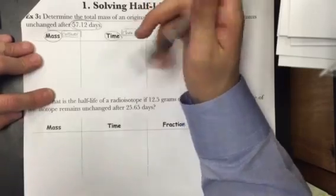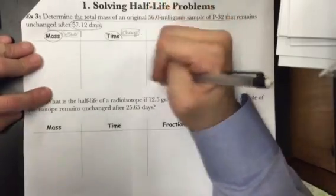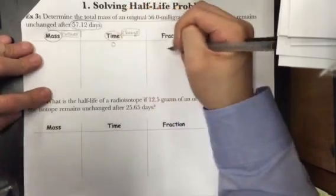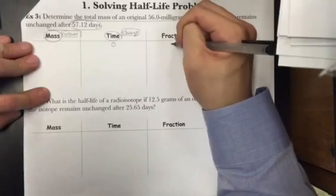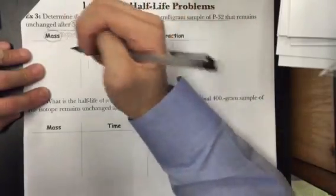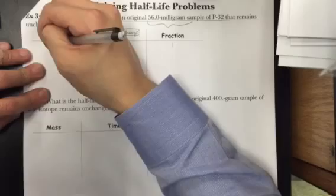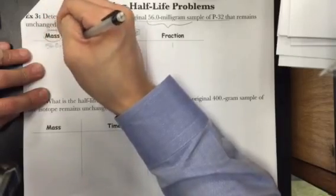Now for step 1, what you have to do is make sure that you label the time 0 since no time has passed, the fraction 1 since nothing has decayed, and the mass 56.0 milligrams since that's what we start off with.